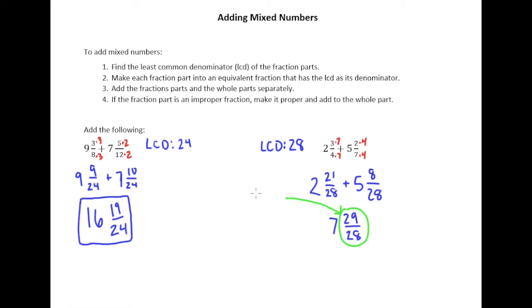So to turn that into a mixed number, we understand we're supposed to take the top, divide it by the bottom. And 28 goes into 29 once. 1 times 28 is 28. Subtract and get the remainder. And so what does that tell us? That tells us that 29 twenty-eighths is the same as 1 and 1 twenty-eighth.